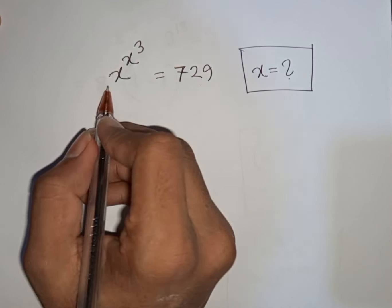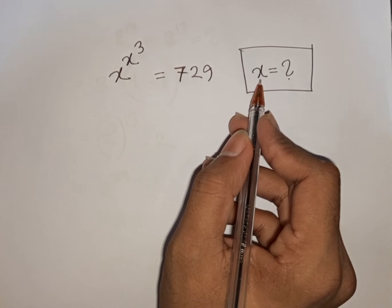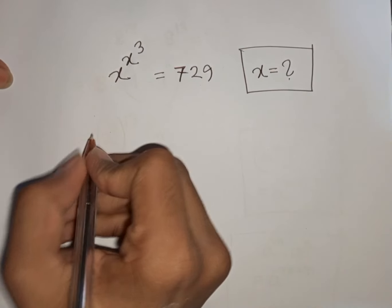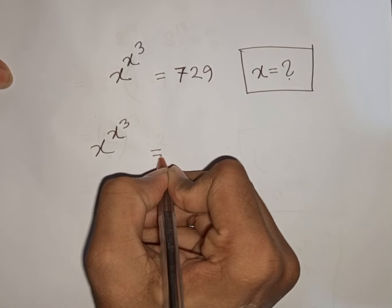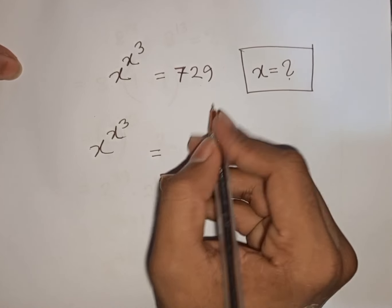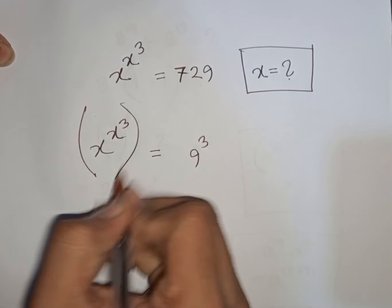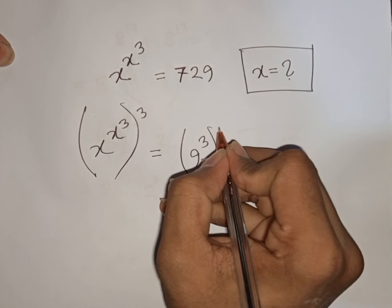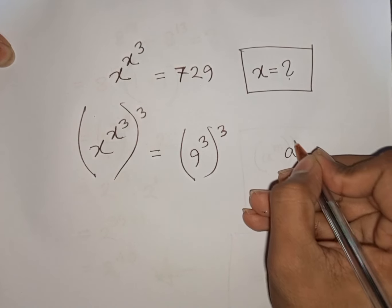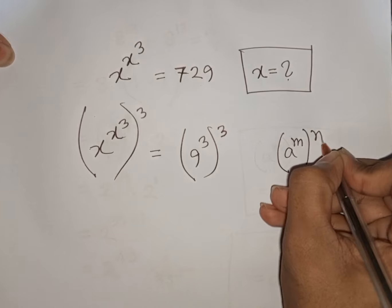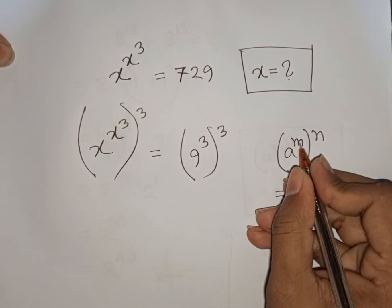Next problem: How to solve x power x power 3 is equal to 729. Find the value of x. We have x power x power 3 is equal to 729, which can be written as 9 power 3. We multiply by power of 3 on both sides, and apply the rule that a power m, bracket power n, equals a power n, bracket power m.